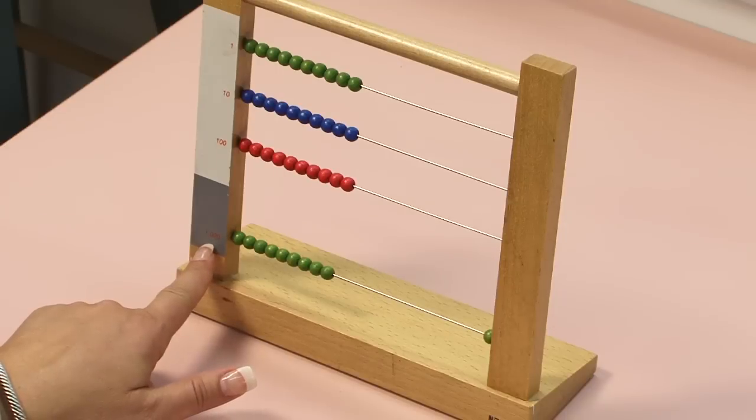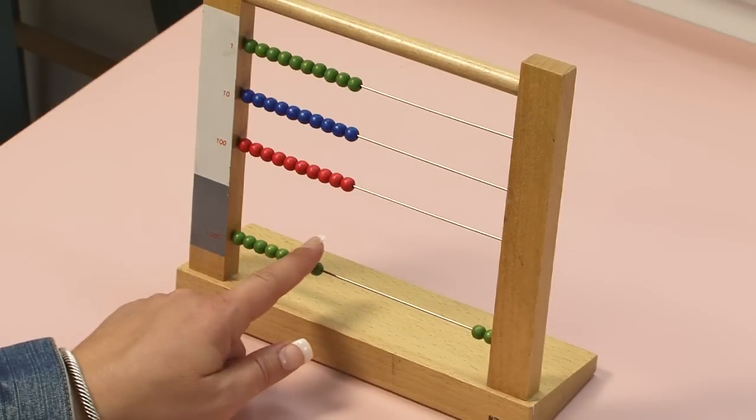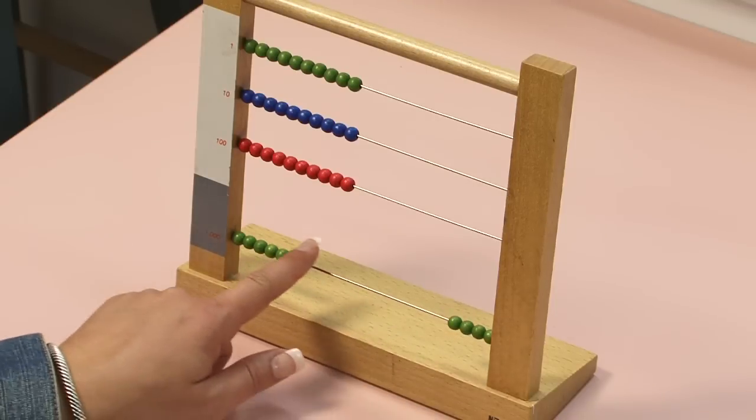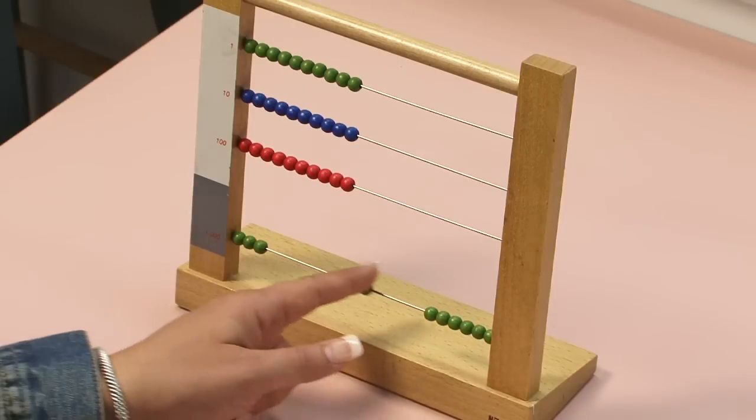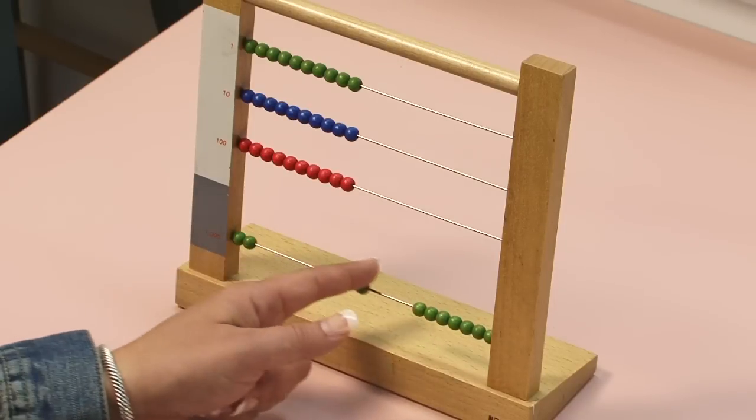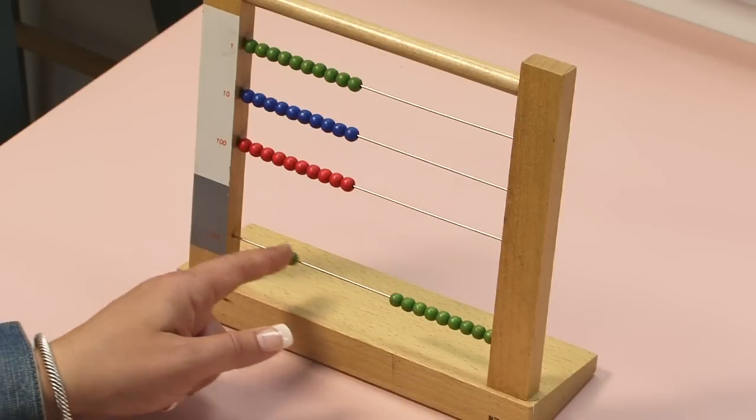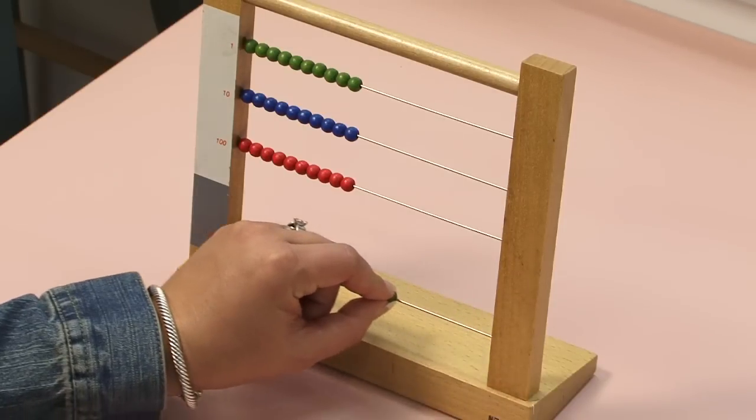Now we're in the thousands. One thousand, two thousand, three thousand, four thousand, five thousand, six thousand, seven thousand, eight thousand, nine thousand, and ten thousand. This is the small bead frame.